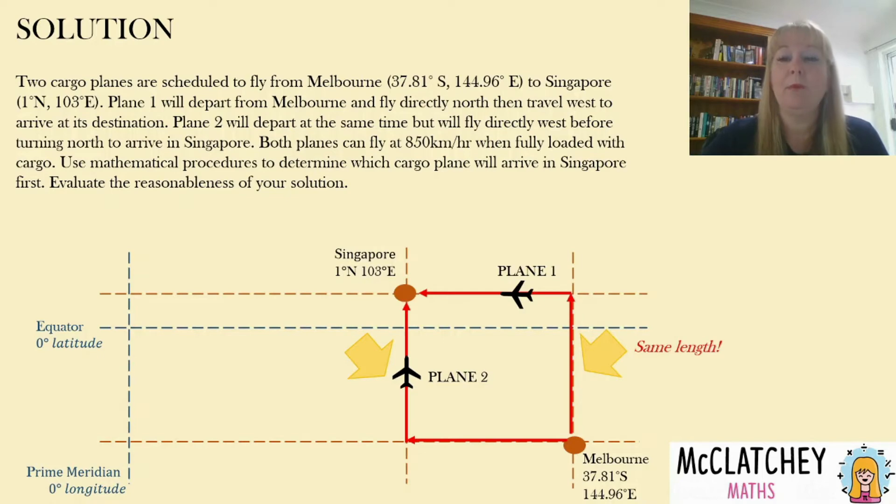However it's important to note that the two northerly legs that both of those planes have flown are going to be the same length because they're both on lines of longitude great circles and therefore they are both the same length because all our longitude lines are the same length. However these two westerly legs are going to be different lengths. In fact Singapore is only one degree north of the equator so it's quite close in length to a great circle.